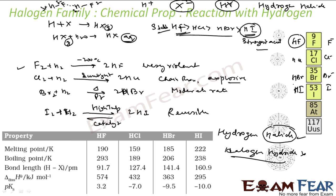Why not halogen hydride? Because halogens are more electronegative. The convention is that the first element in a compound name is more electropositive and the second is more electronegative. Since hydrogen is more electropositive than halogen, we write HX — not XH. For example, in CH₄ carbon comes first; similarly here hydrogen comes first because halogens are more electronegative.